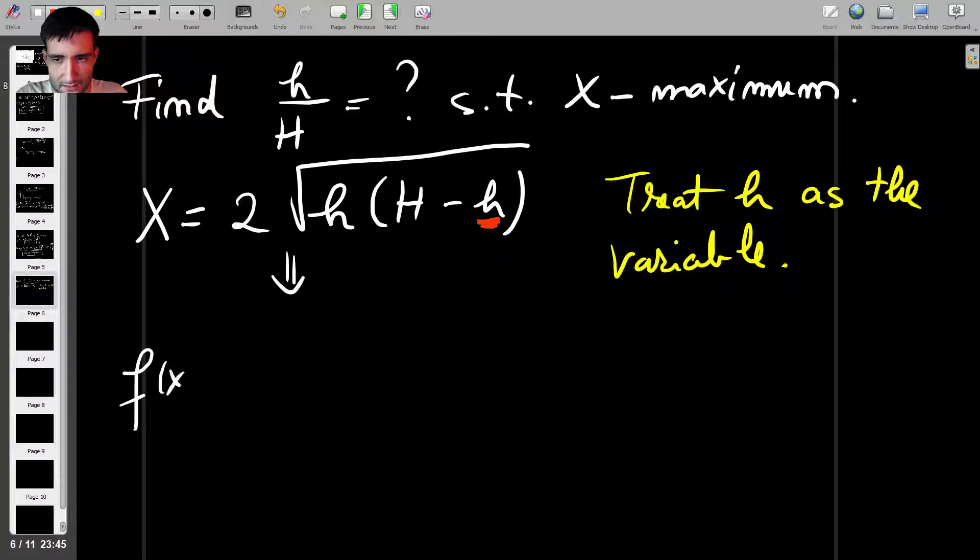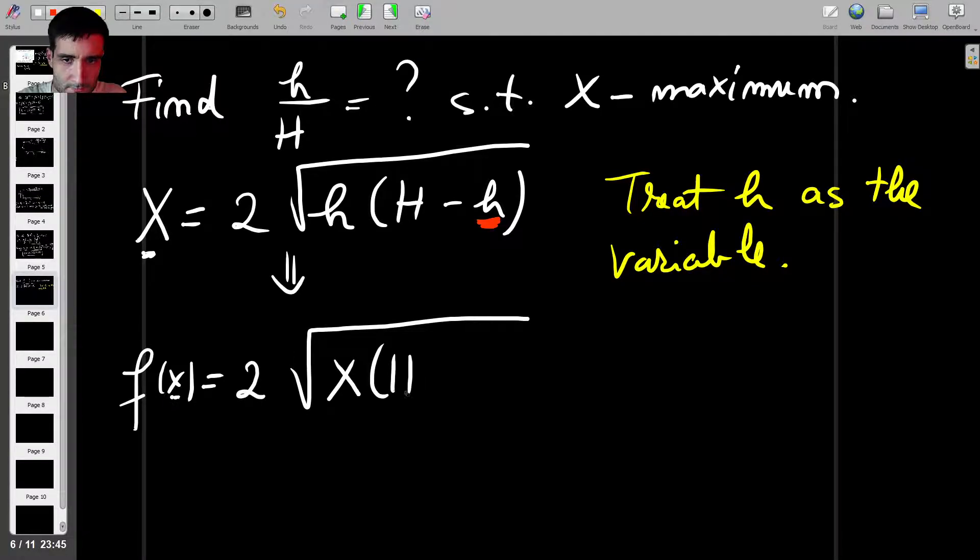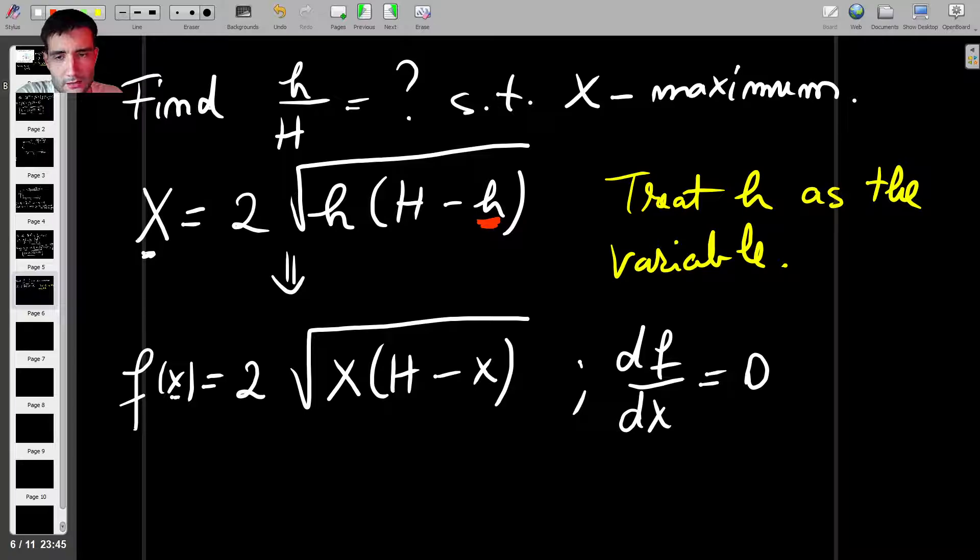To make this into a more mathematically friendly expression, I'm going to say that this is a function f of X, where this X is not the same as this X, by the way, this is just a dummy variable X, which gives me that the function will be 2 times X times H minus X. How do you find the maximum of this function? Well, you can try differentiating it, and that's exactly what I'll do. So I'll do df by dX equals 0 to find the stationary points, and let's see what we get.